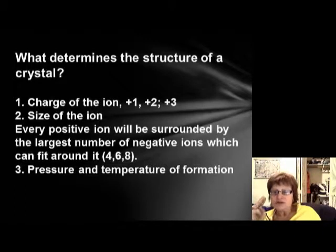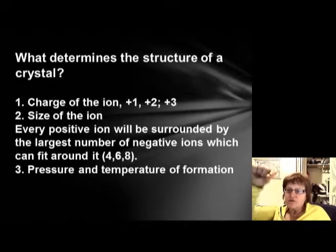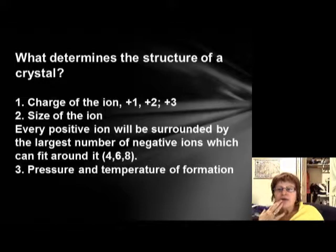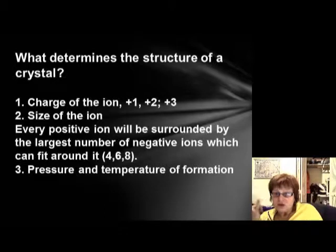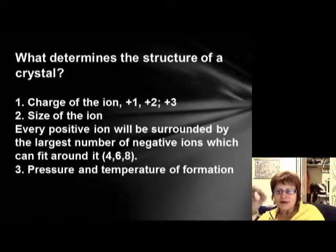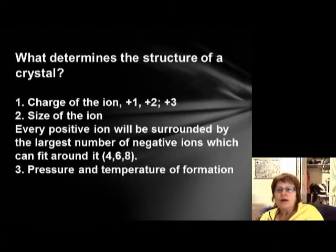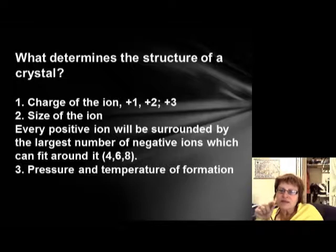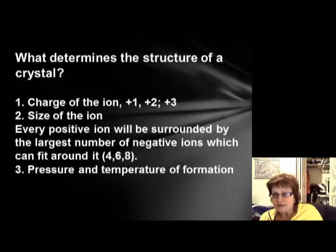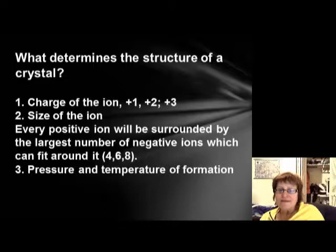These are the three kinds of bonds you need to know. Remember: ionic is gaining and losing electrons, covalent is sharing, and metallic is freely moving electrons. What defines the structure of a crystal? First, the charge of the ion—is it one positive, two positive, maybe three positive? Second, how big the ion is. Third, the number of surrounding ions, because every cation is surrounded by as many anions as possible—could be four, six, or eight.